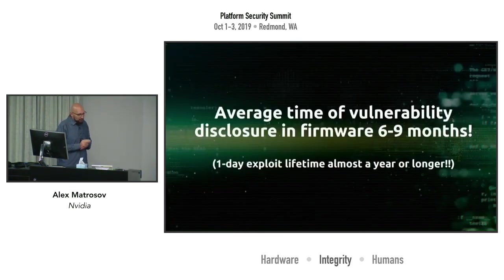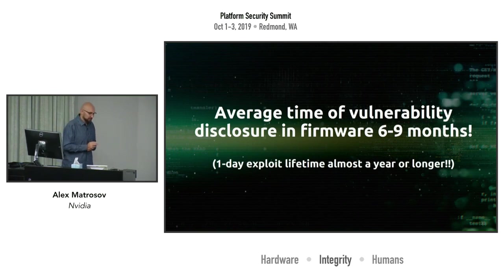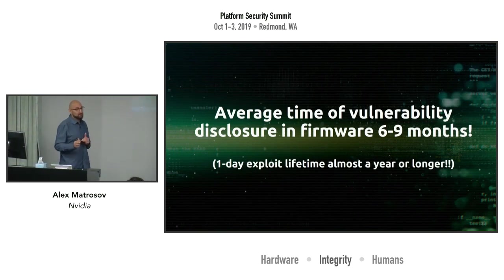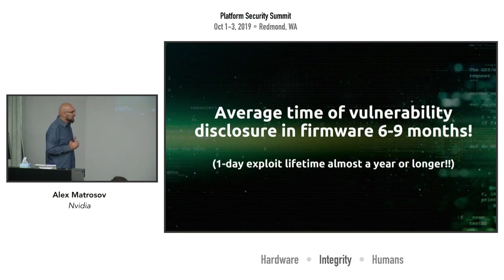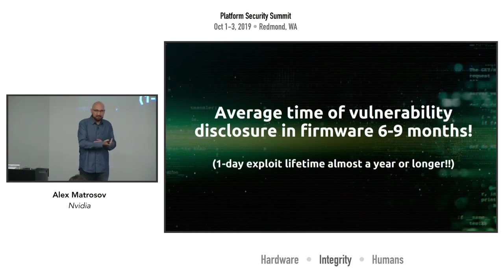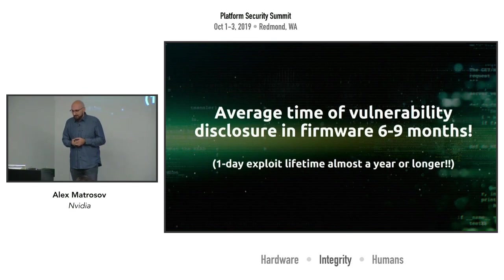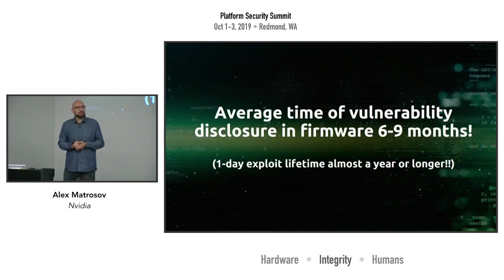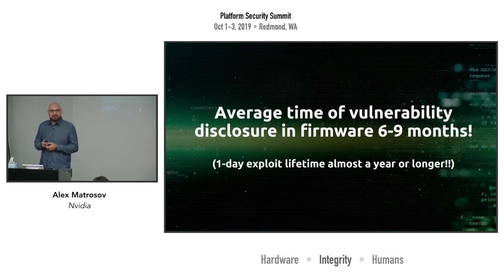I want to highlight the average time to patch a firmware vulnerability — I count roughly six to nine months. That's how long a one-day vulnerability can be present on a system, and six to nine months is actually a good timeline because sometimes it's even longer and takes years. And if we're talking about static memory, it persists forever.